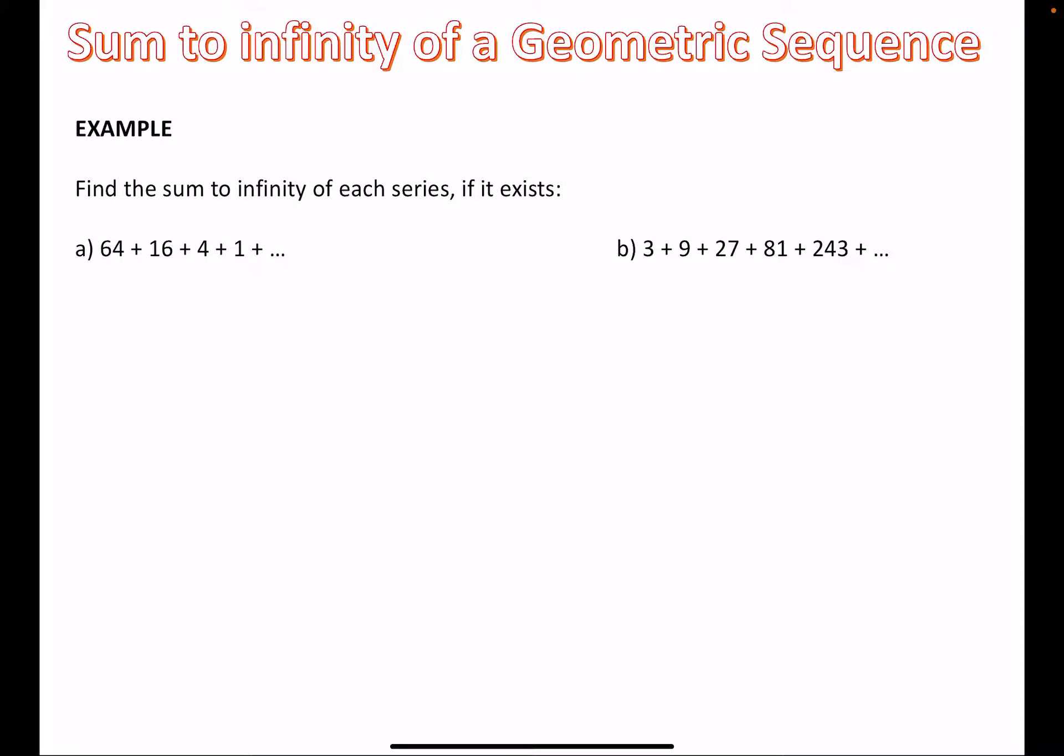So a couple of examples. Find the sum to infinity of each series if it exists. So the first thing we know is that the first term is 64 and that the common ratio is 16 divided by 64, or to be honest, you could just do 1 divided by 4. It's much obviously easier, but either way, it simplifies to 1 over 4, in which case, because this number is between minus 1 and 1, then a sum to infinity does exist.